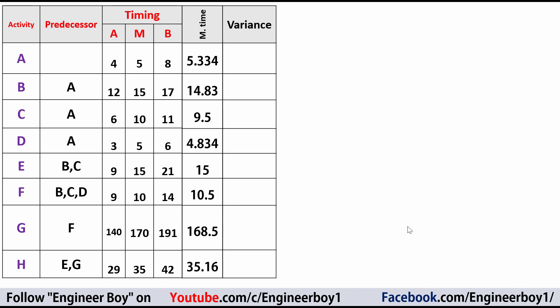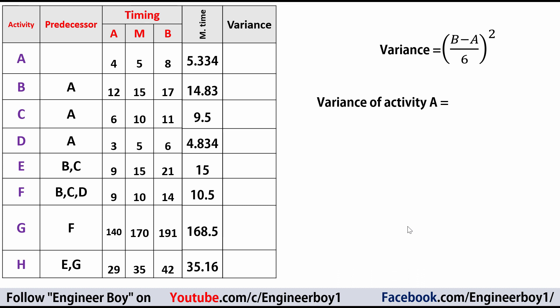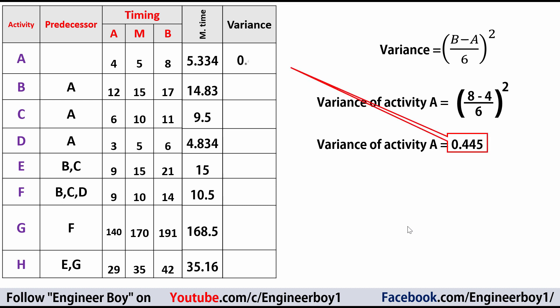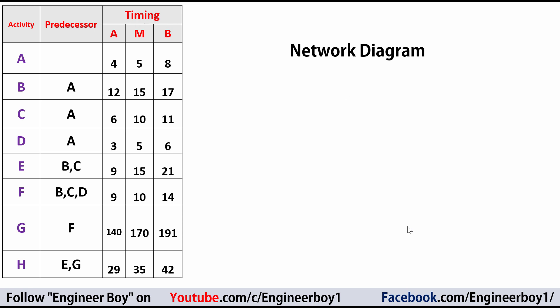Next, we calculate the variance of each activity using the formula: Variance = ((B − A) / 6)². For activity A: ((8 − 4) / 6)² = 0.445. This value is placed in the table, and the same formula is applied for activities B through H.